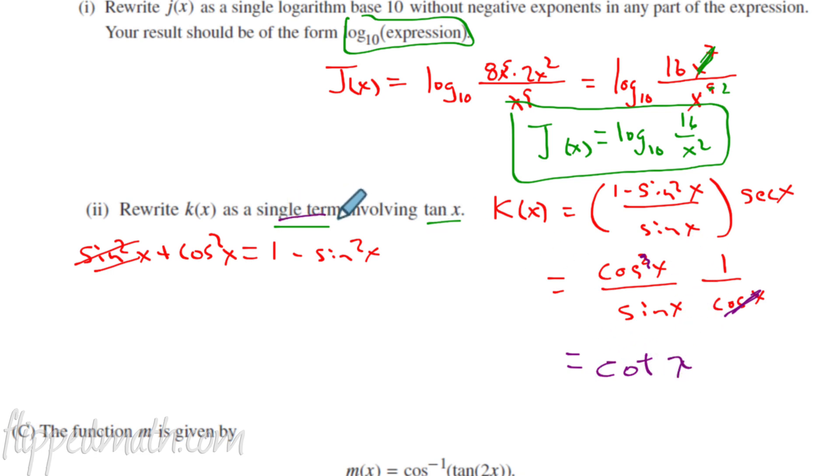But they want us to write it as a single term involving only tangent. And so for my final answer, I know the cotangent is one over the tangent of x. And look, I wrote it as a single term only with tangent. Done. Not too bad.